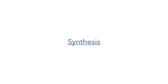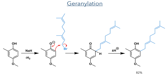So let's start the synthesis. The first reaction is a geranylation, where a phenol is firstly deprotonated by sodium hydride, and the resulting anion then takes part in an electrophilic aromatic substitution with a bromide. The loss of a proton restores the aromaticity in the ring and forms the product at an 82% yield.